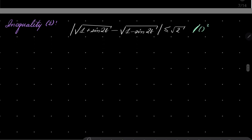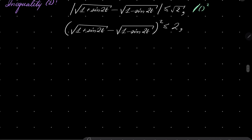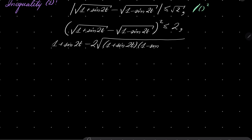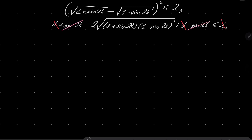We'll get the following. Notice that we can change the absolute value to just parentheses because we are dealing with real numbers. Taking the square on the left-hand side, we'll get 1 + sin(2t) − 2√((1 + sin(2t))(1 − sin(2t))) + 1 − sin(2t) ≤ 2. Now we have cancellations: sin(2t) minus sin(2t) cancel, and 1 + 1 = 2 cancels the right side.